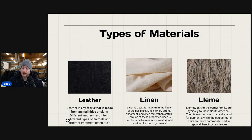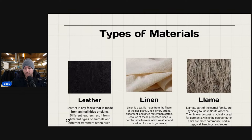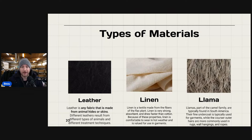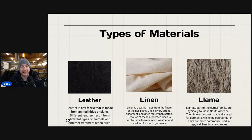Llama is part of the camel family, typically found in South America. The fine undercoat is used for garments, while coarser outer hairs are used in rugs, wall hangings, and ropes. I have yet to find anything llama — I have found alpaca wool, which is a little different. But if you find anything llama, you might want to consider picking it up because it has great value and the demand is there.